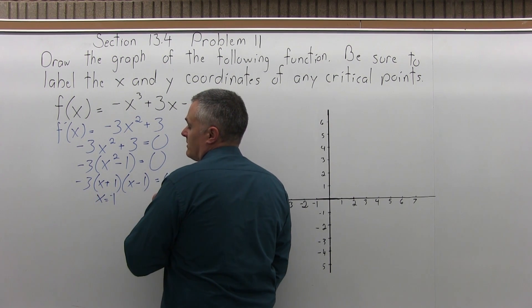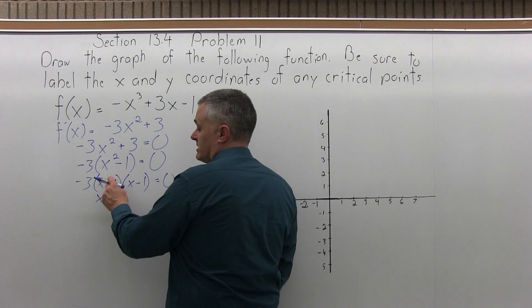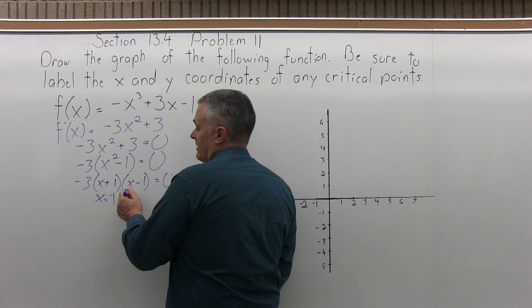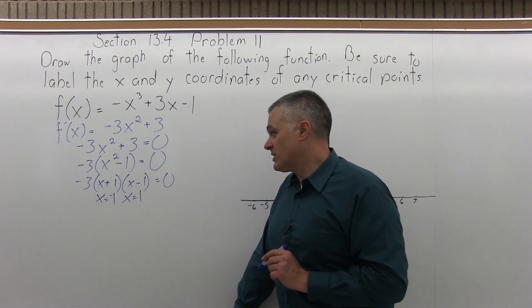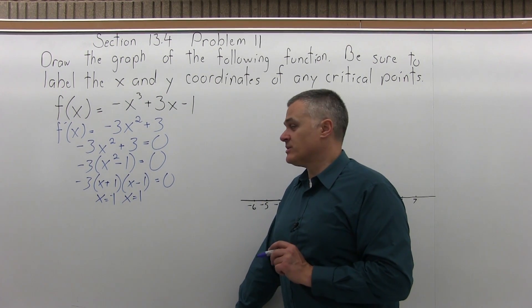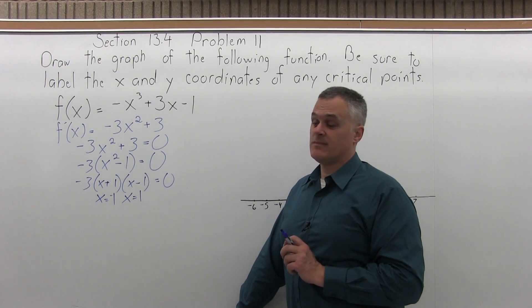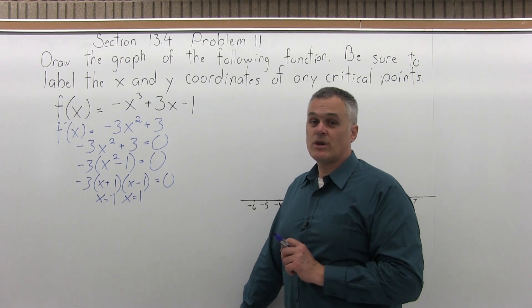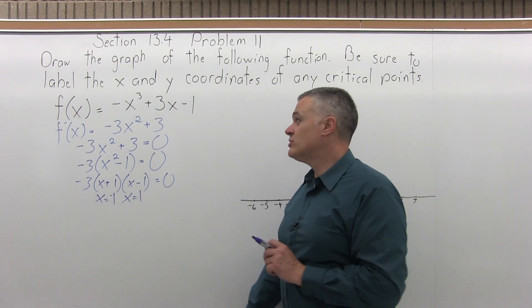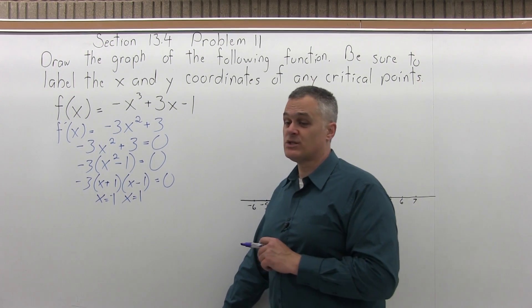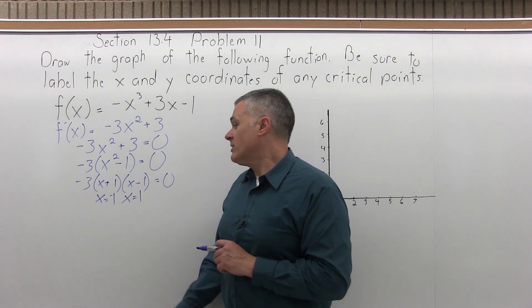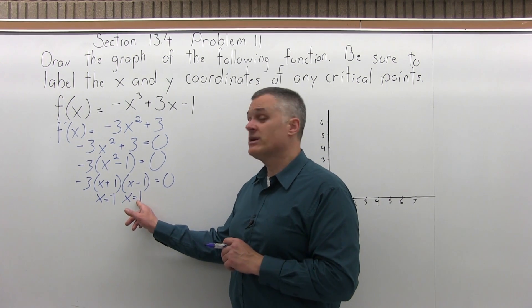The next step is to take the first derivative we found and set it equal to 0, then solve for x. Because there's an x squared, I expect to find two answers. This is a little different — we have to solve by factoring. You don't put numbers on one side and x on the other and divide, because that won't find the answer.